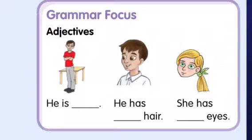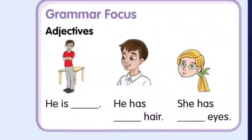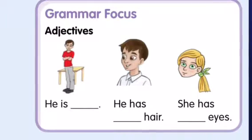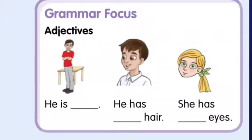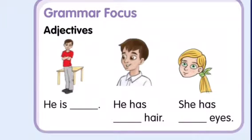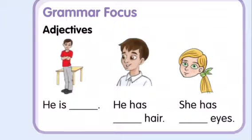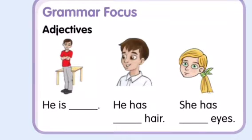Look at picture one — he is tall. In the second picture, he has dark hair. Sometimes the color is not very clear, so we say dark — he has dark hair. Picture number three, she has green eyes. So: number one, he is tall; number two, he has dark hair; number three, she has green eyes.